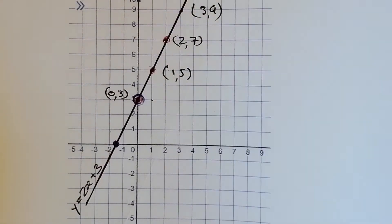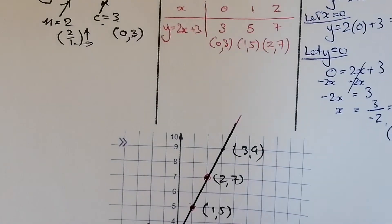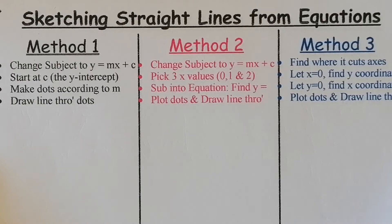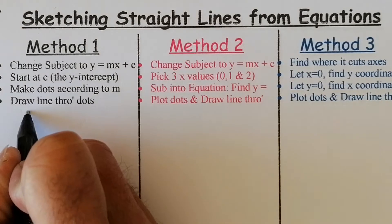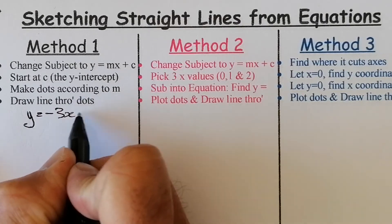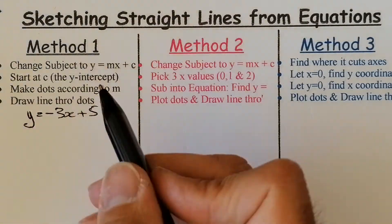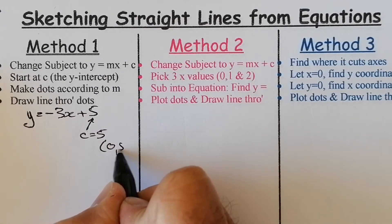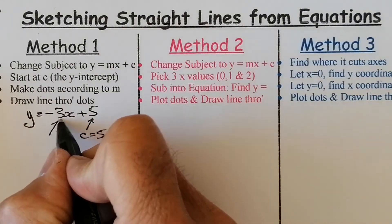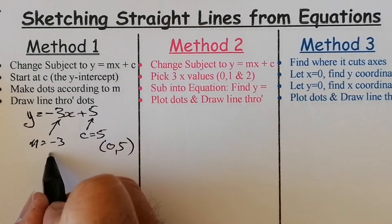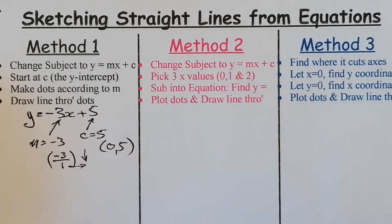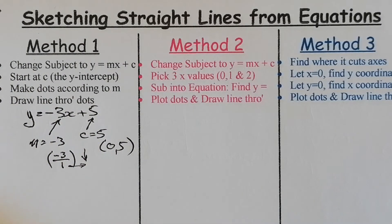Now let's look at a negative gradient. We'll work with y equals negative 3x plus 5. For Method 1: c equals 5, so the starting point is (0, 5). My gradient is minus 3, meaning every time I go along 1, I go down 3. I plot (0, 5) and keep going along 1 and down 3 each time, building up several dots.